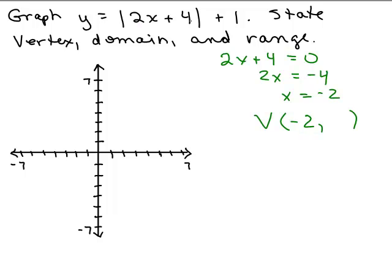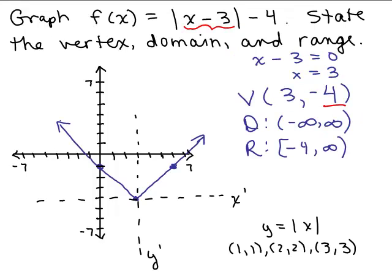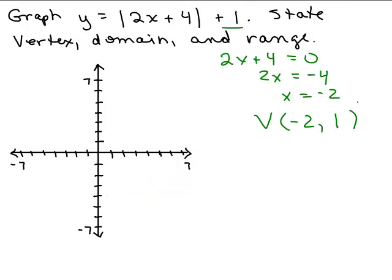Then when we plug that in, we'll be able to find the y-value. So when you plug in negative 2 for x, you'll get absolute value of 0 — that's the whole point. You chose a value of x to make the absolute value equal to 0, so you'll get 0 plus 1. This number ends up being your y-coordinate of the vertex. Look at the previous problem — when I plugged in 3, it made that term 0, so negative 4 was the y-coordinate. Same thing happens here: 1 will be the y-coordinate, giving us vertex (-2, 1).